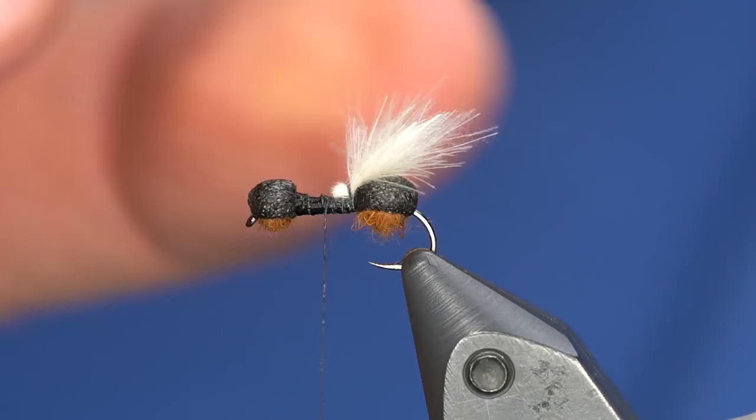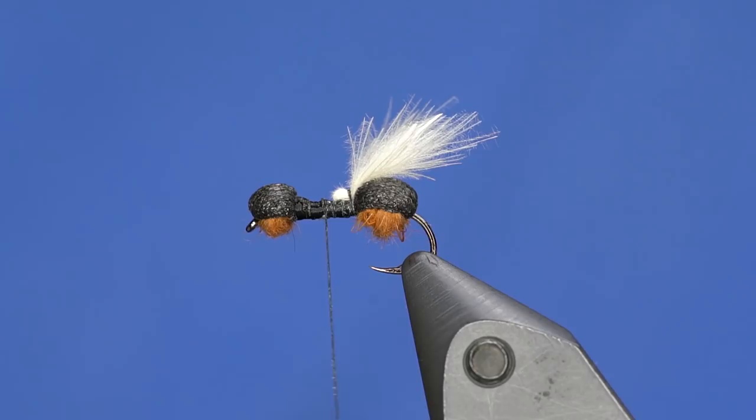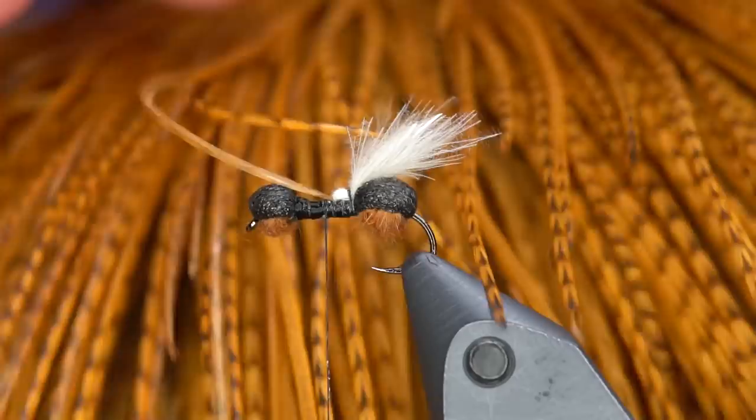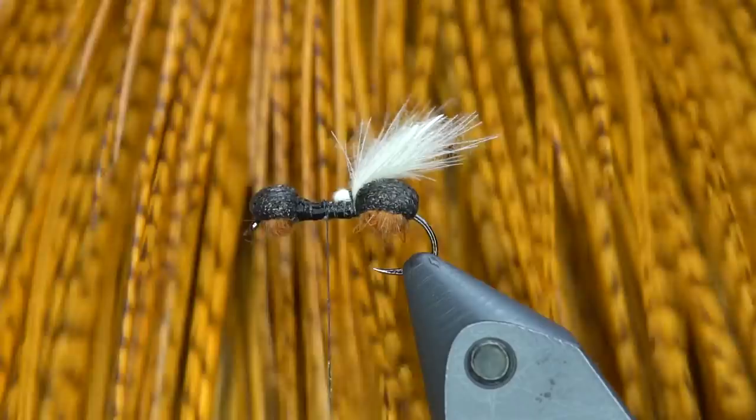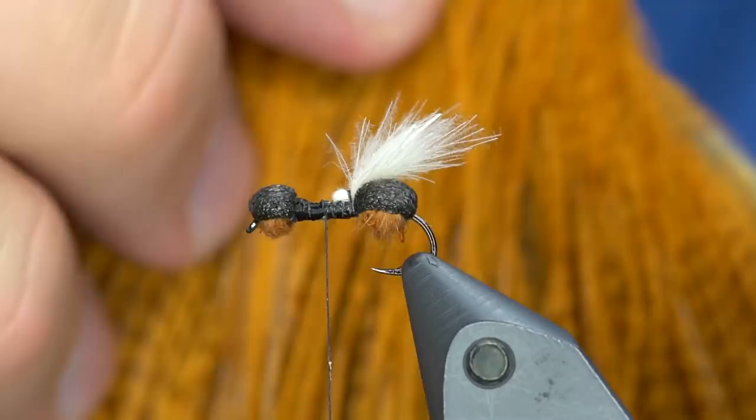Okay, now for the best part of it all is the hackle. So we have these special Whiting capes and what it is, it's a ginger dyed over a salt and pepperish variant. So it's not quite grizzly and it's not quite plain, it's just kind of speckled a little bit. And so we're calling this the cinnamon pepper variant and it's a nice gingerish color, really cool for ant patterns like this, caddis, all different types of things. So we'll show you what it looks like wrapped.